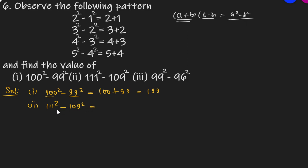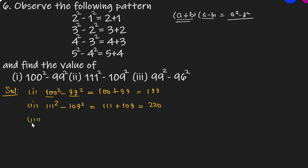Now second one: 111 का square minus 109 का square. इनको add करेंगे तो मिलेगा 111 plus 109. इनको add करेंगे — 9 plus 1 is 10, carry 1; 1 plus 0 plus 1 is 2; and 2 plus 1 is 2 — so the answer is 220.